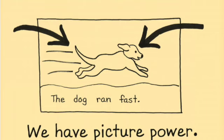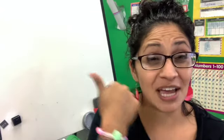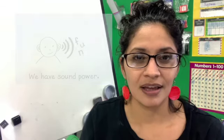Friends, remember: when you get stuck on a word and picture power is still not helping enough, that's okay because we have sound power. You're going to look at that word that's giving you trouble, look at the first letter, think about our alphabet chart, and ask yourself what sound does that letter make. Once you have the sound and the picture power, you'll be able to put the two together to figure out and read that word.